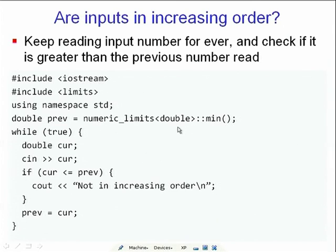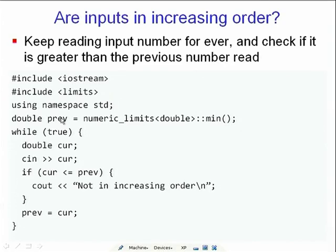The first number cannot be compared with anything before it, but by definition it is in increasing order. The smooth way to implement that is to pretend the number before the first was minus infinity, or the minimum possible double. In C++ you implement that by including 'limits' and saying 'numeric_limits<double>::min()' — this basically says find me the minimum limit of type double.